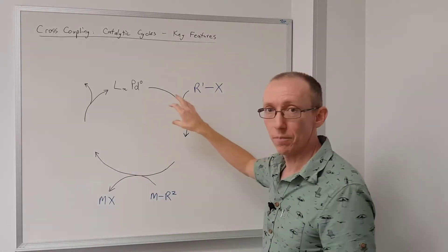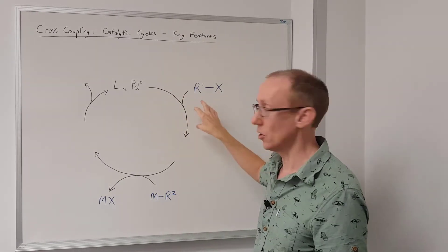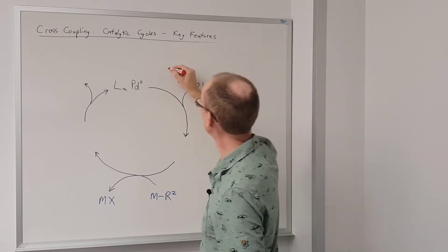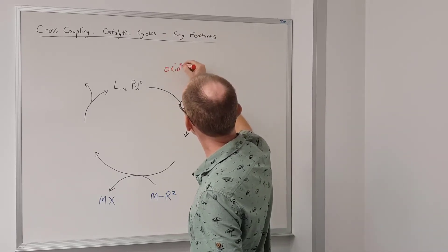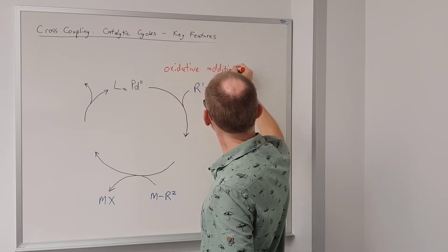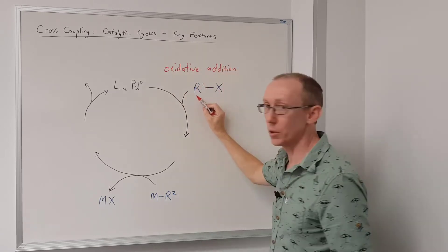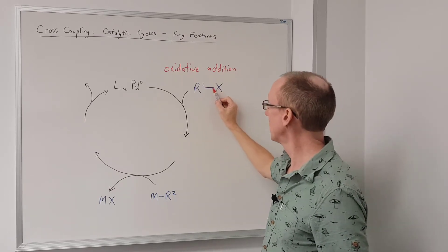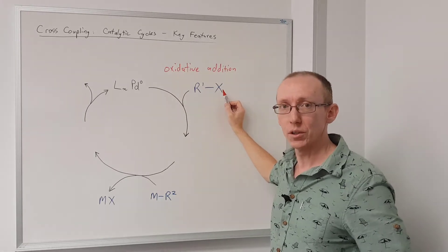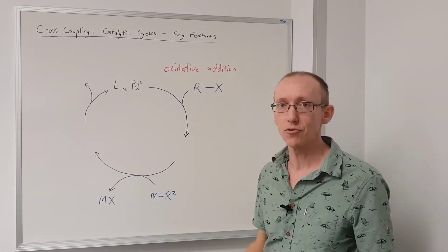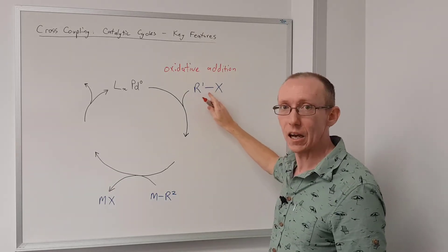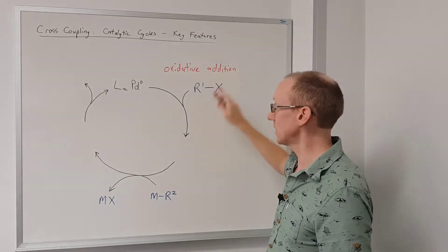The first step of most of these mechanisms that is in common is what's known as an oxidative addition reaction. Oxidative addition will involve some kind of organic species that has a leaving group — quite often a halogen or what we call a pseudohalide, so things like triflate, tosylate, things like that — something that polarizes that carbon–X bond and can act as a leaving group.